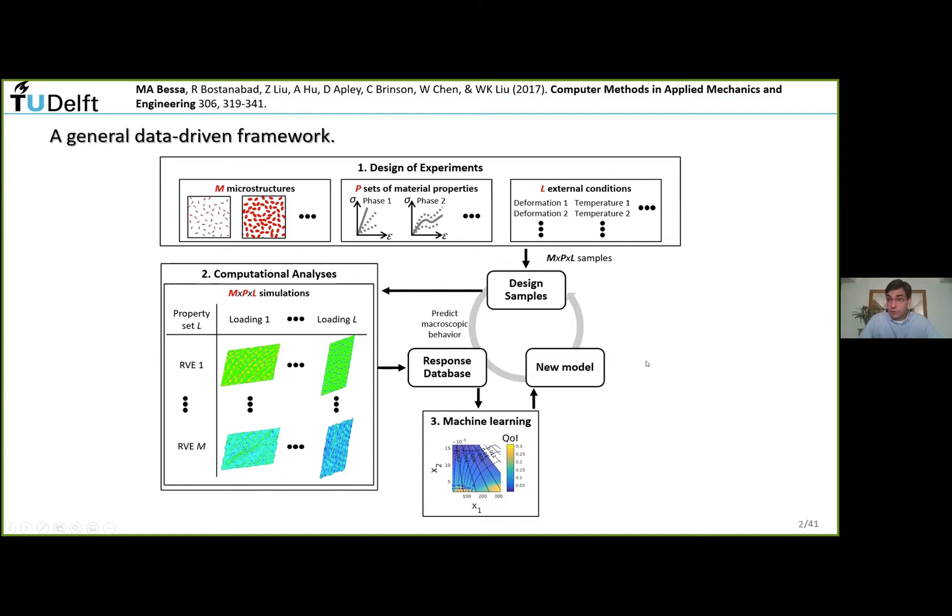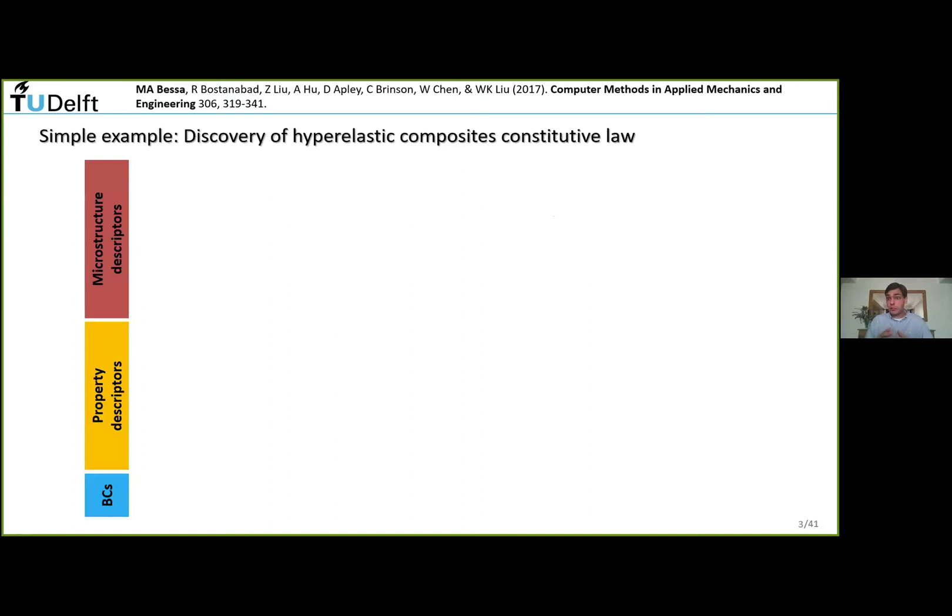Once you have data with outputs - stiffness, yield point, plastic behavior - you use machine learning to find the relationship between inputs and outputs. These models can be for regression, classification, clustering. You could even couple optimization algorithms to come up with a new design. This is the general workflow.